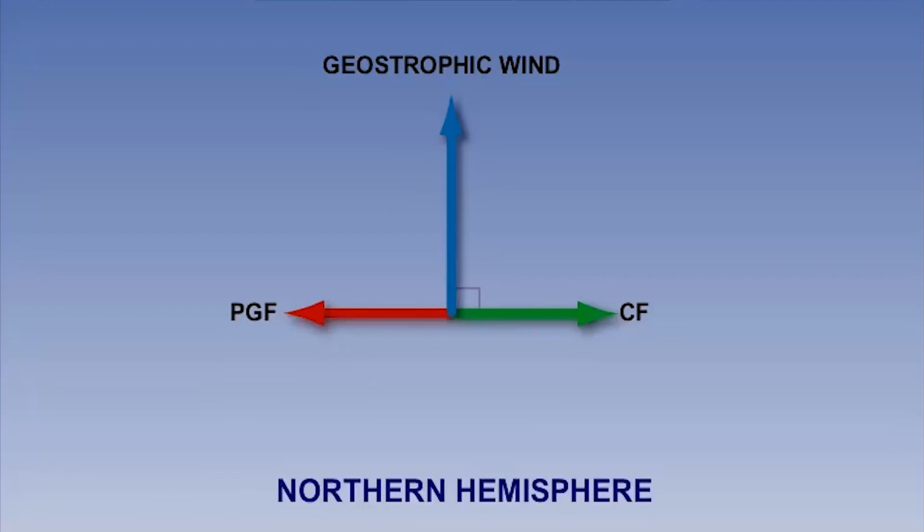At approximately 1500 hours, we said the surface wind speed will be at its highest. Therefore, the Coriolis force will only be slightly reduced compared to the geostrophic wind.